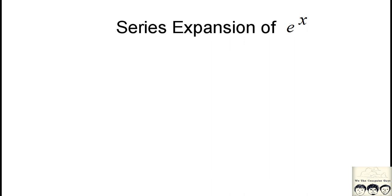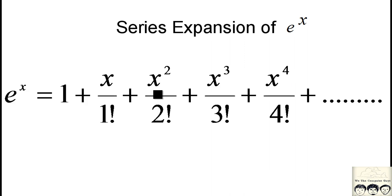This is the problem where we have to find the value of e raised to x using an expansion. The formula is: e raised to x equals 1 plus x by 1 factorial plus x squared by 2 factorial plus x cubed by 3 factorial plus x raised to 4 by 4 factorial and so on. This is an infinite series that continues to infinity.